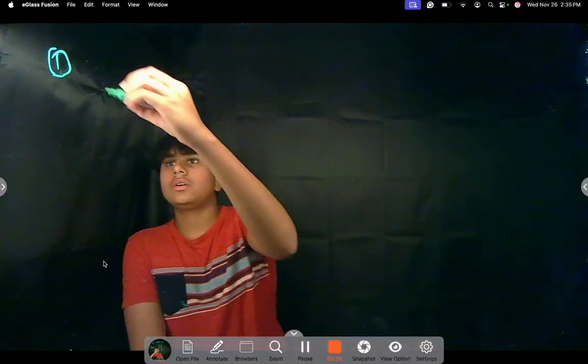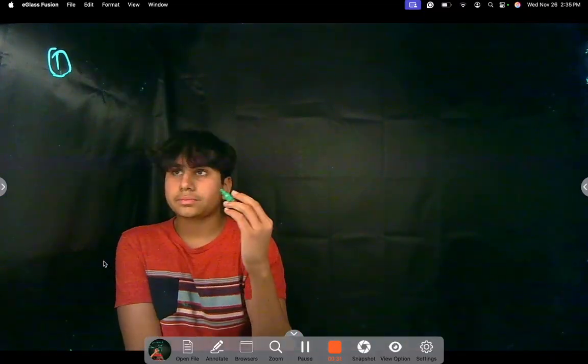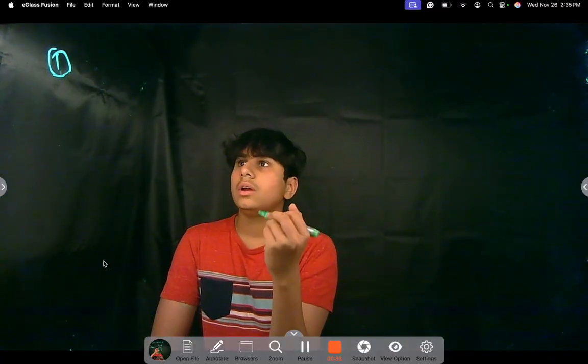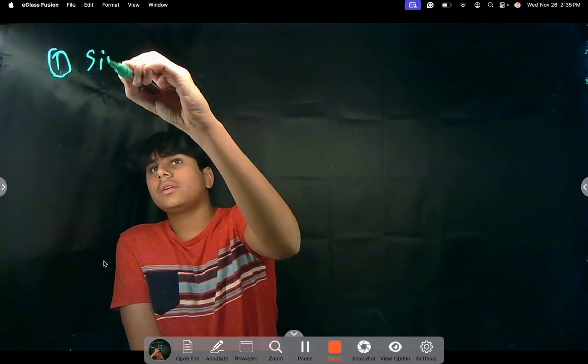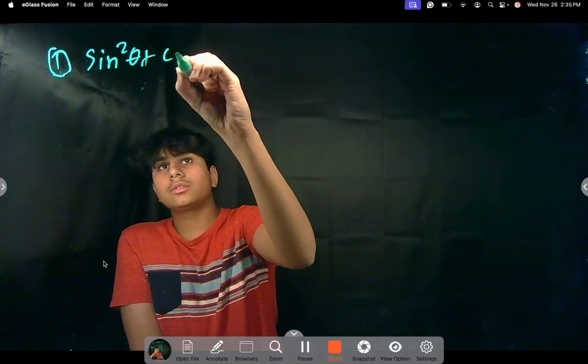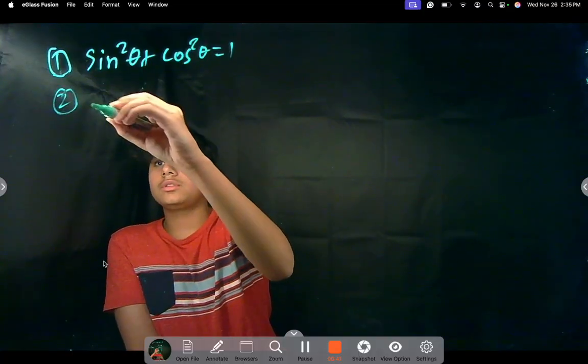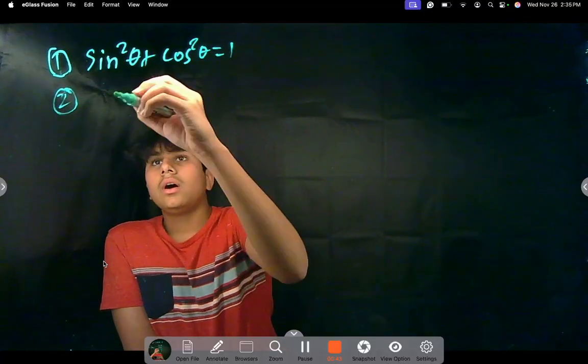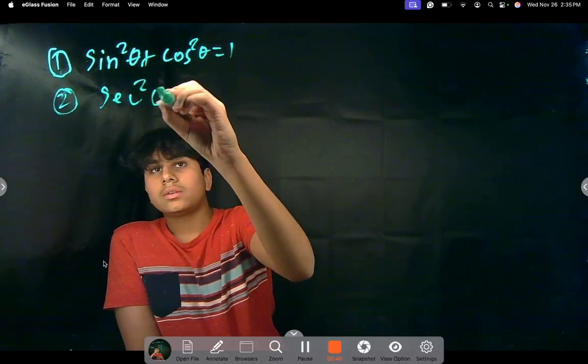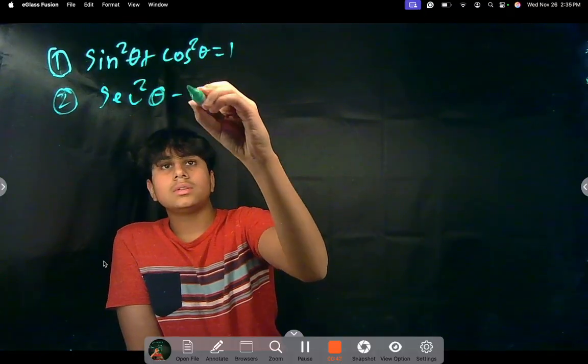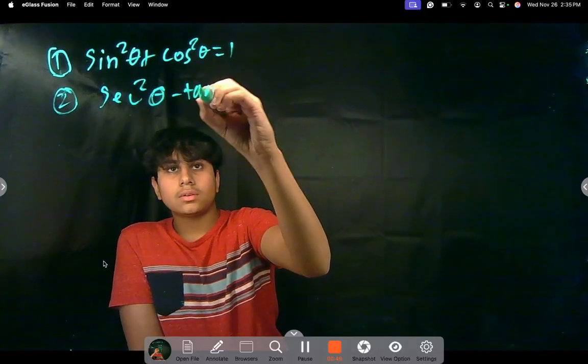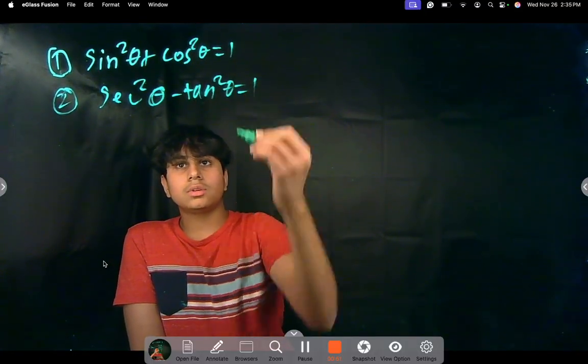So for the first equation, that's sine squared theta plus cosine squared theta equals one. Number two is sine squared theta minus tan squared theta also equals one.